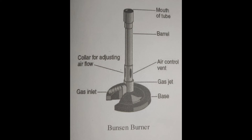And fourth is air control vent, to make it easier to light the burner. And fifth is the gas inlet, connect the gas burner and gas jet. And lastly is the gas jet, allows the gas to enter the burner.